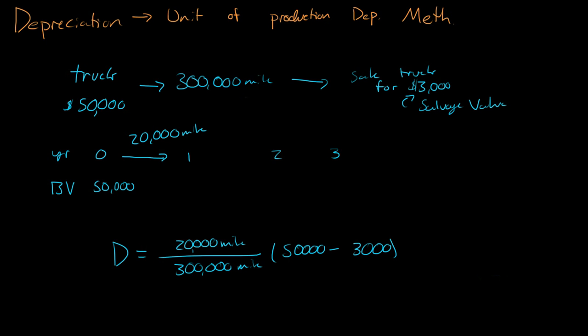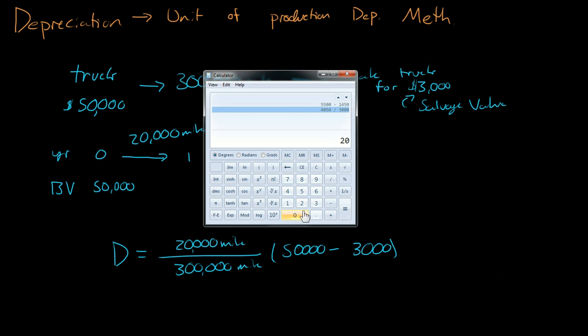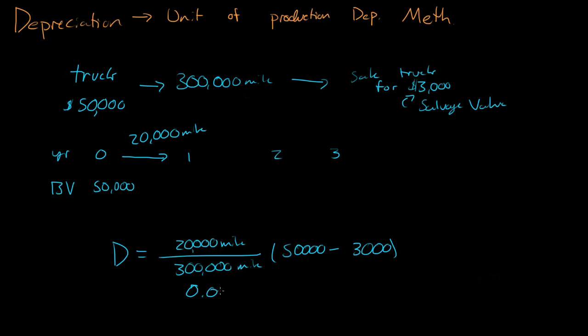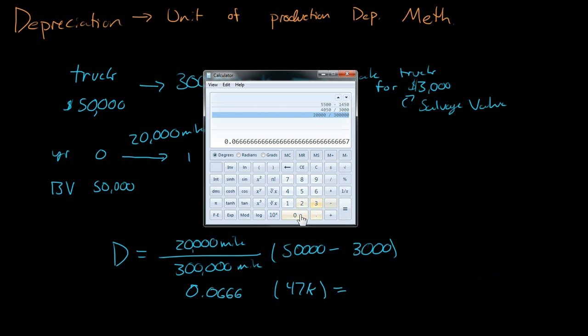So let's look at that real quick. So we have 20,000, we're going to divide by 300,000. So that is equal to 0.0666. Now the price difference, which is just 50,000 minus 3,000, which is 47,000. So what is that equal to? 0.0666 times 47,000 is $3,113.